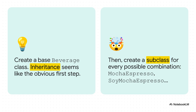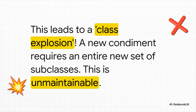Our first instinct as object-oriented programmers might be to reach for inheritance. We could have a base beverage class and then just create a specific subclass for every single possible order. You want a mocha espresso? That's a class. A soy mocha espresso? That's another class. You see where this is going — you immediately see the problem. This just doesn't scale. What happens when the boss wants to add caramel syrup or oat milk? You'd have to create a whole new explosion of subclasses for every combination that already exists. This is what we call a class explosion, and it is a one-way ticket to a codebase that nobody wants to maintain.